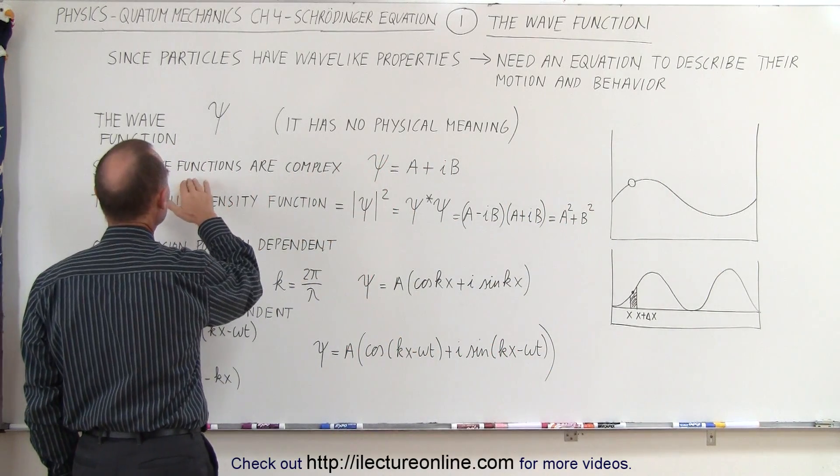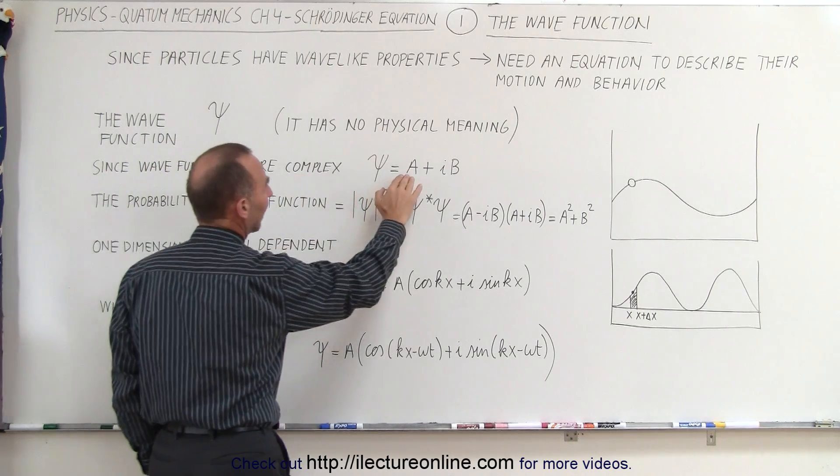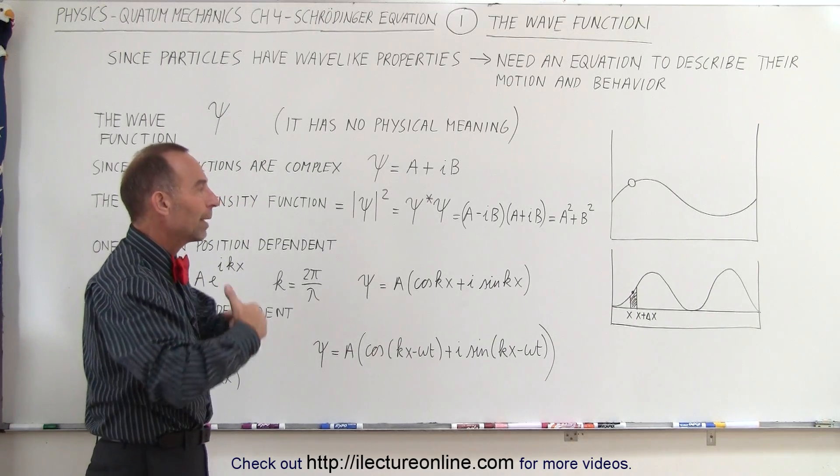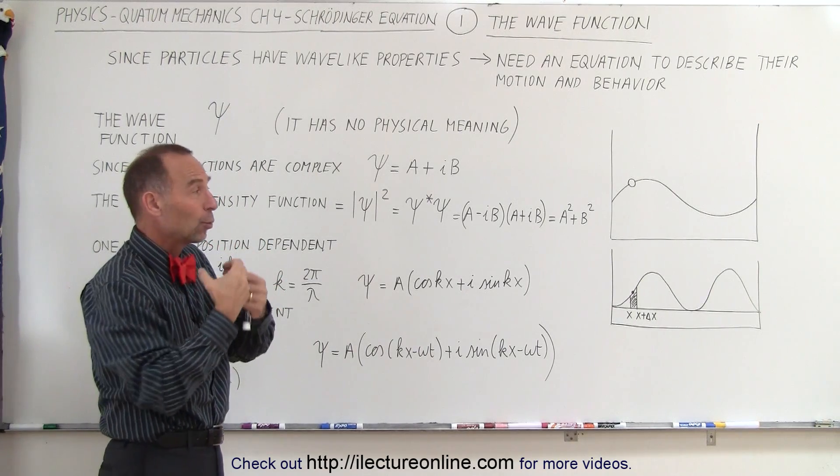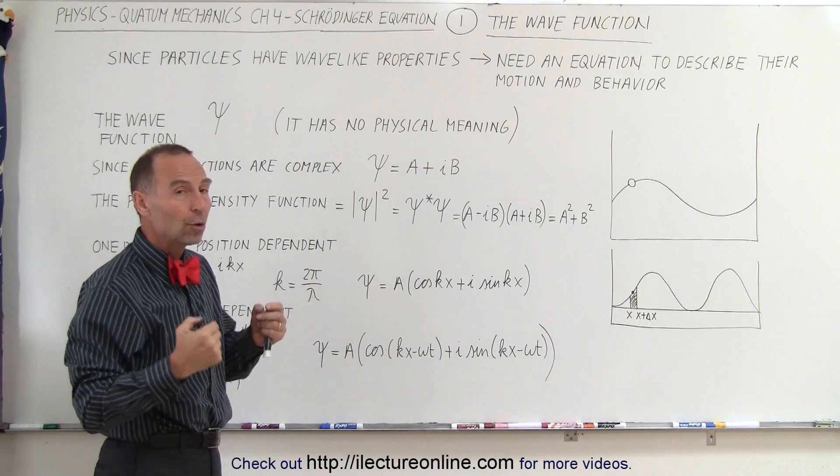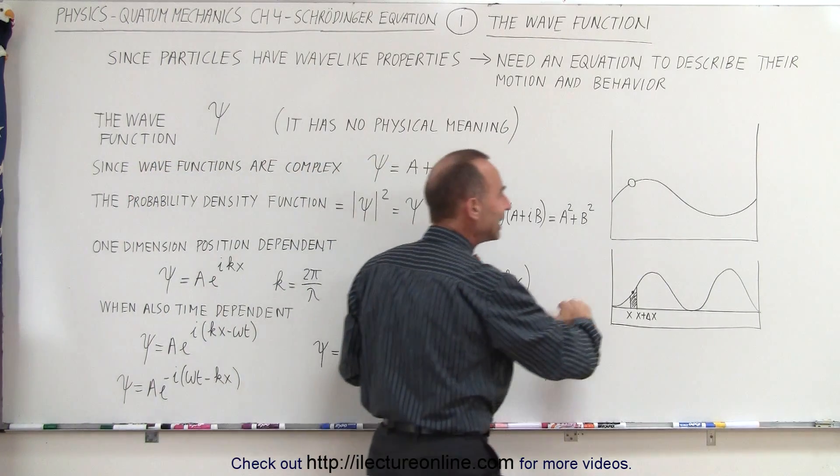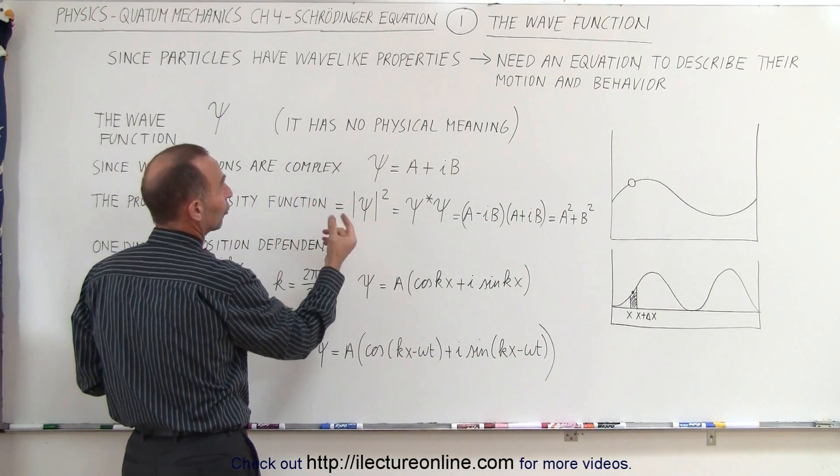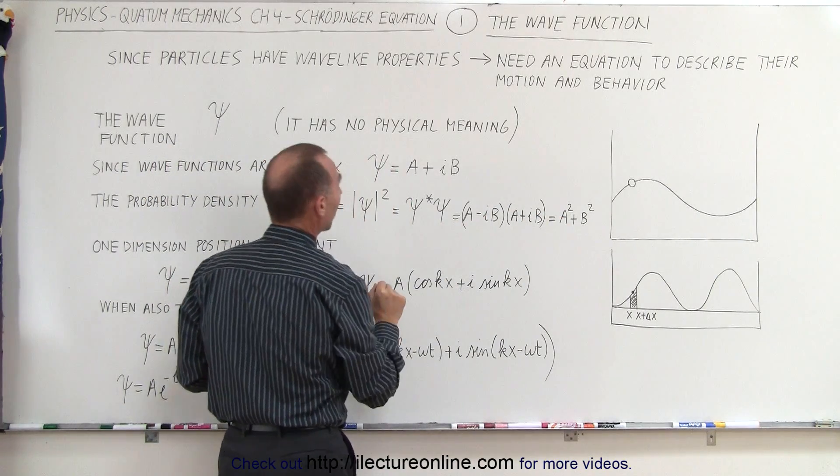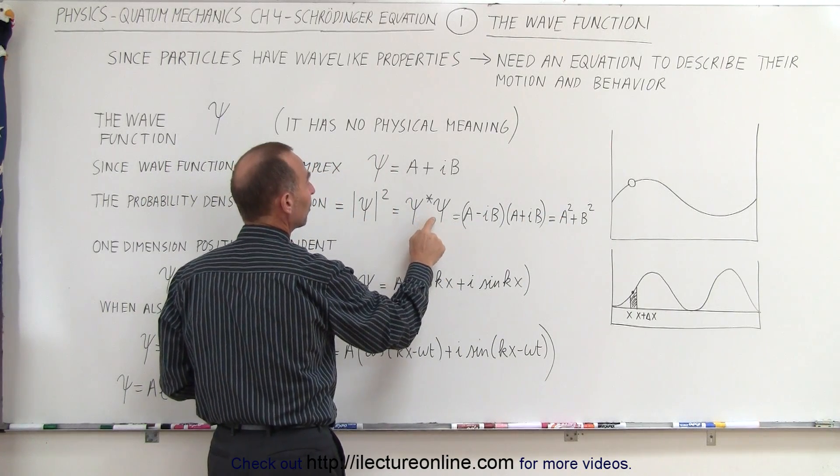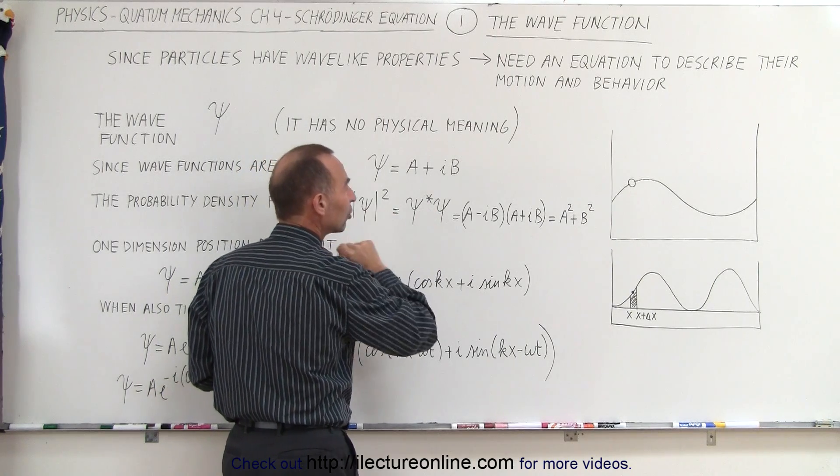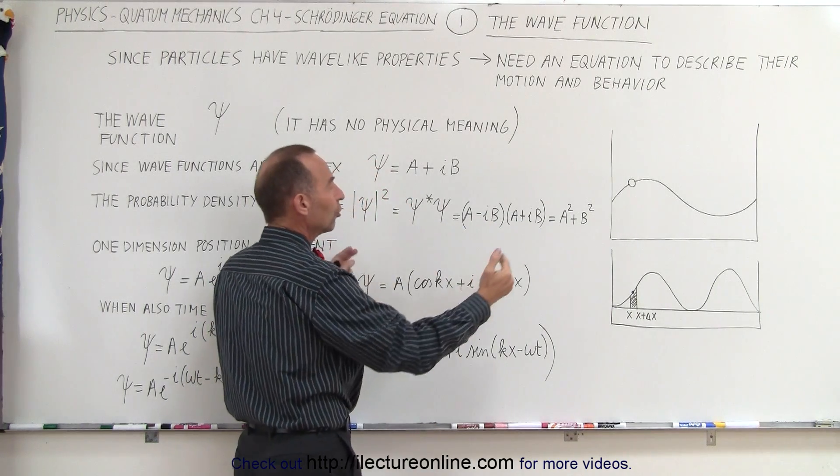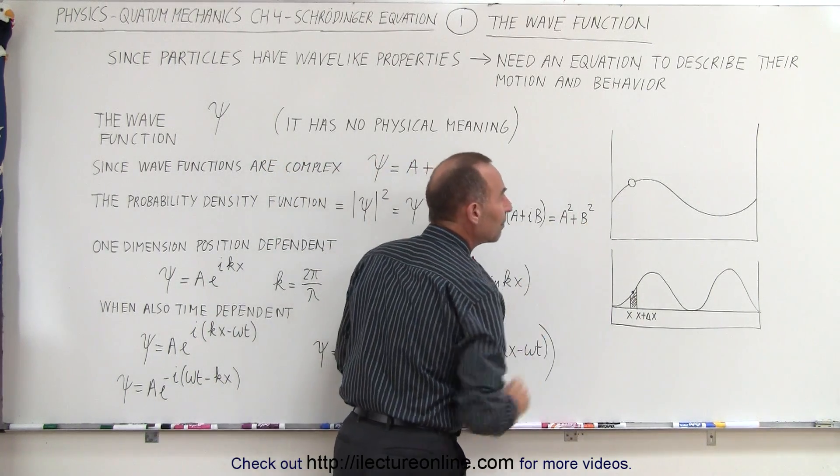So we came up with a wave function that had to be complex. It had to have a real part and an imaginary part. And to be able to turn that into a real quantity, representing a real feature of particles, we could come up with what we call the probability density function. If you take the wave function and you square it, in order to square it, we have to get rid of the imaginary part. We can do that by multiplying the function by its complex conjugate, which is simply the same function, but with a negative sign in front of the imaginary part. When we multiply the two together, the imaginary part disappears.